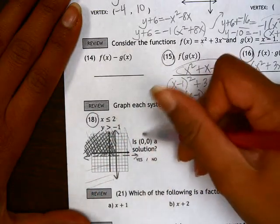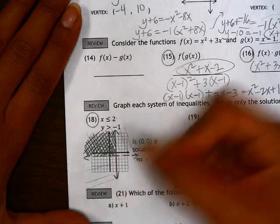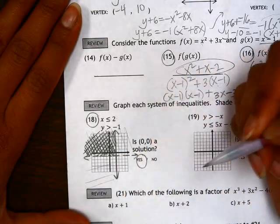And we need to answer this question, is (0, 0) a solution? The point (0, 0) is right here, which is in this shaded region, so that's going to be a yes.